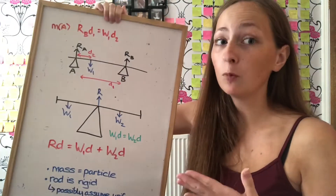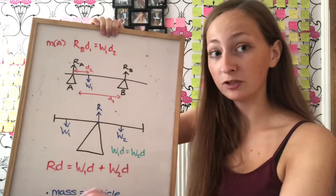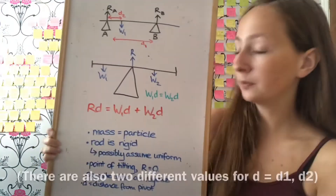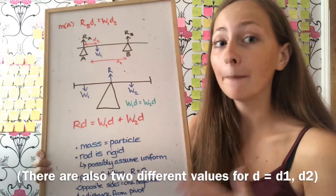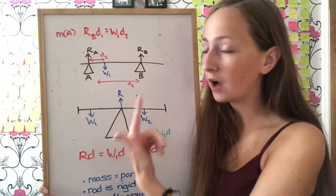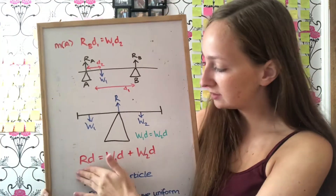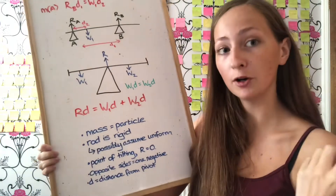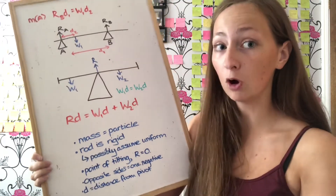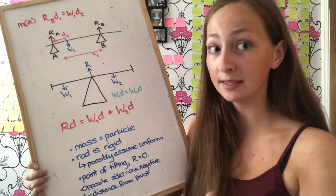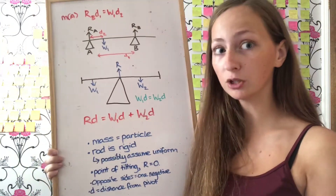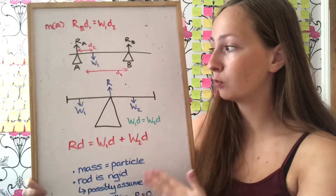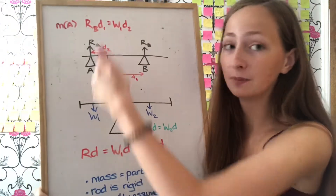For a simpler diagram with one pivot, one side will be positive and one negative as they balance each other: W1 times d1 equals W2 times d2. Remember mass is in kilograms. The distance of R from the pivot is zero, which is why that term drops out. The assumptions are: the rod is rigid, the rod is uniform (meaning the centre of mass acts from the centre), all masses are particles, and the point of tilting means R equals zero.